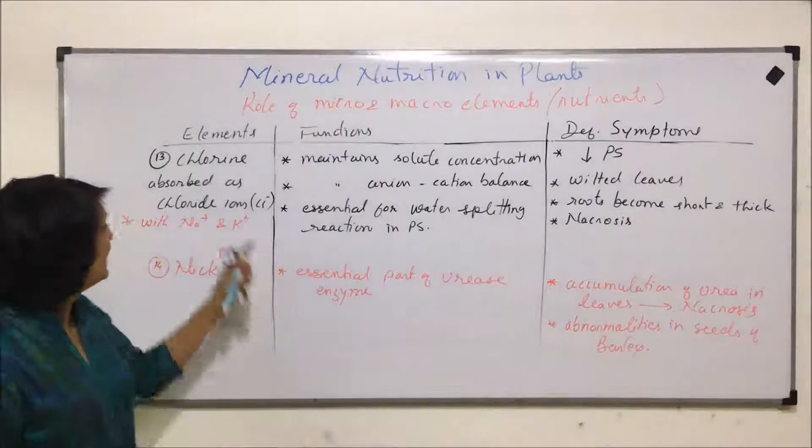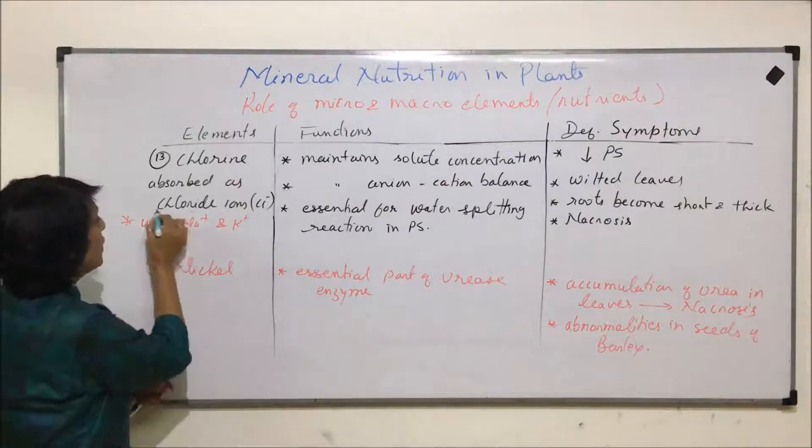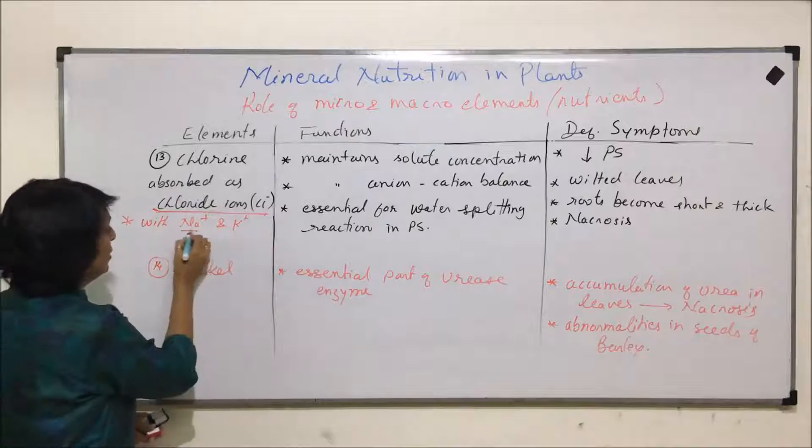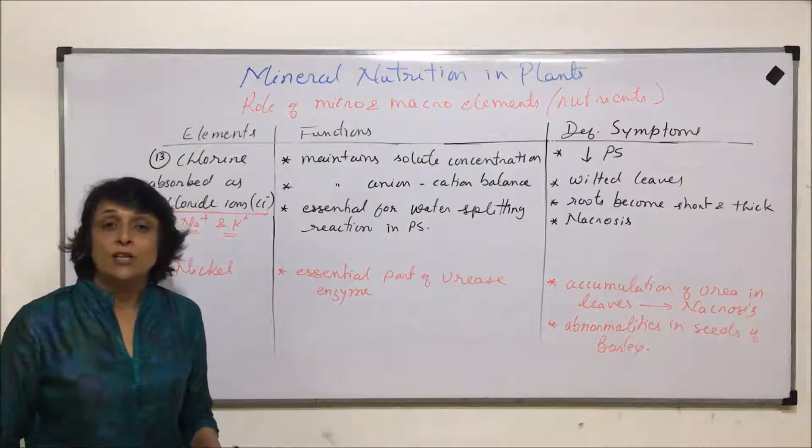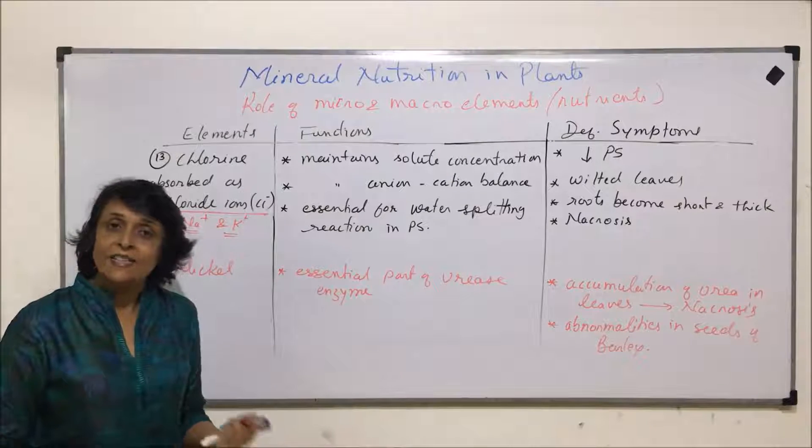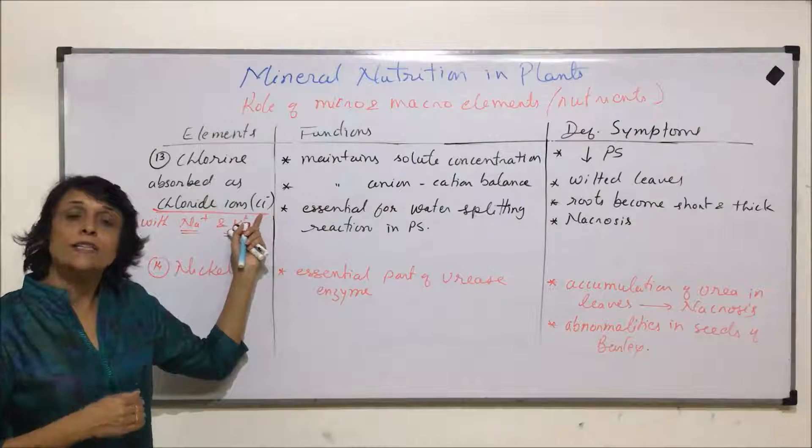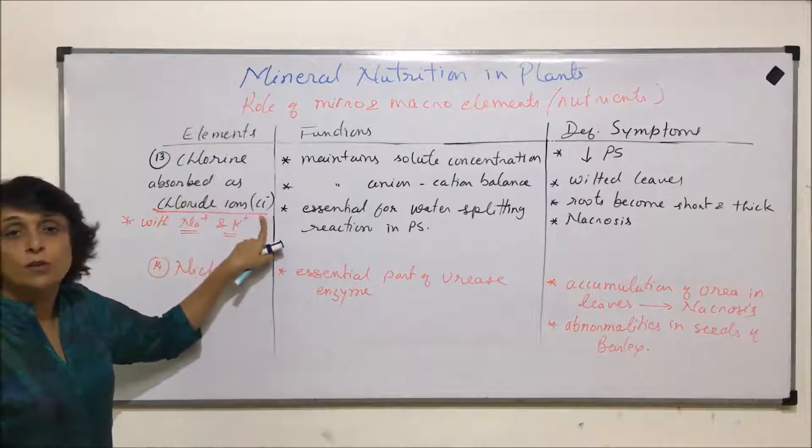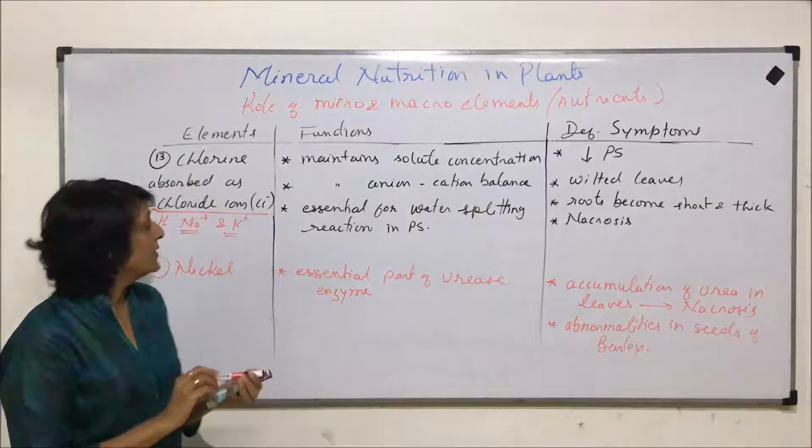The next element is chlorine. It is absorbed in the form of chloride ions along with sodium and potassium ions. That means when sodium and potassium ions are absorbed actively or passively, chloride ion also gets absorbed along with them.